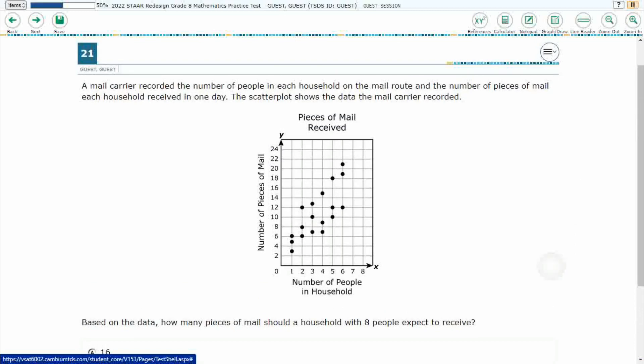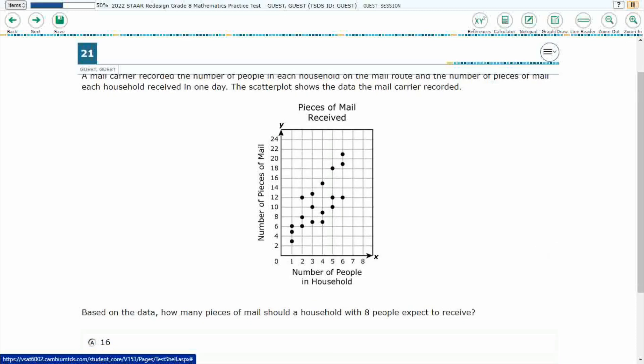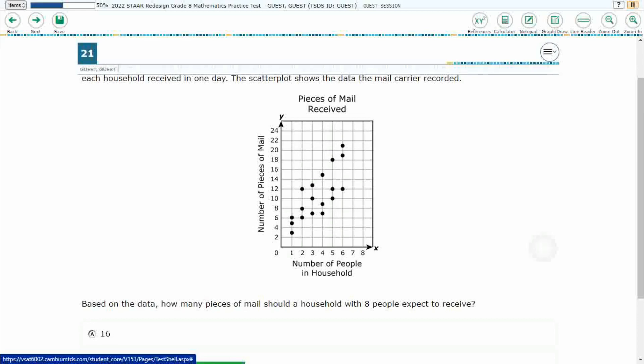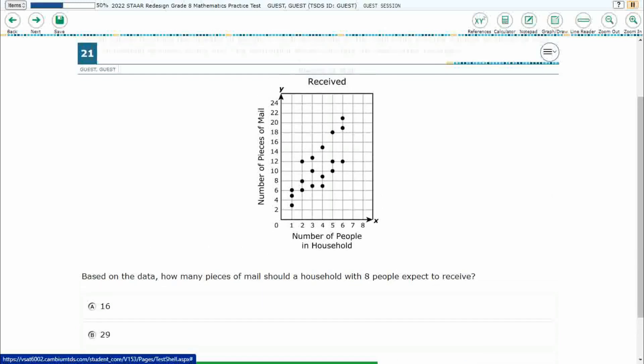We've got a mail carrier here creating a scatter plot. We've got number of people in the household and number of pieces of mail. It makes sense that the more people in the household as you increase on the x-axis, then you're going to increase on the y-axis, the more pieces of mail you're going to get. Based on the data, how many pieces of mail should a household with 8 people expect to receive?